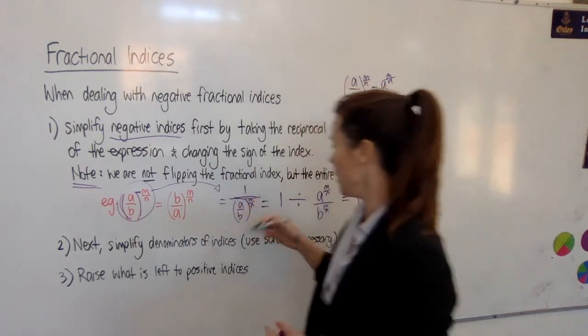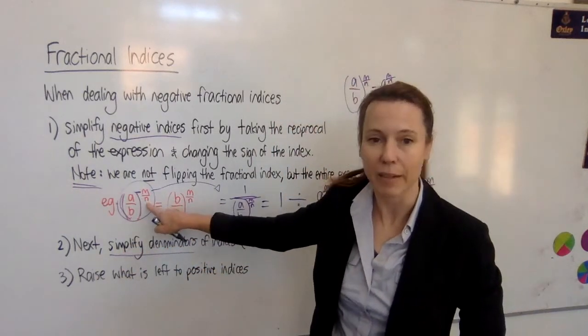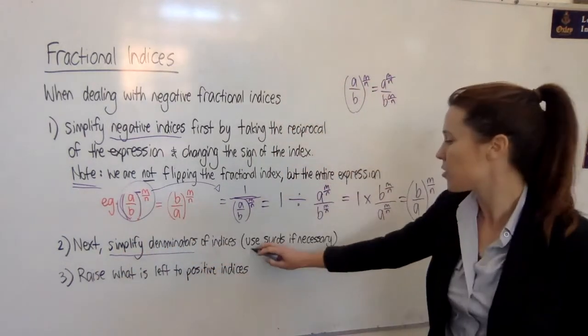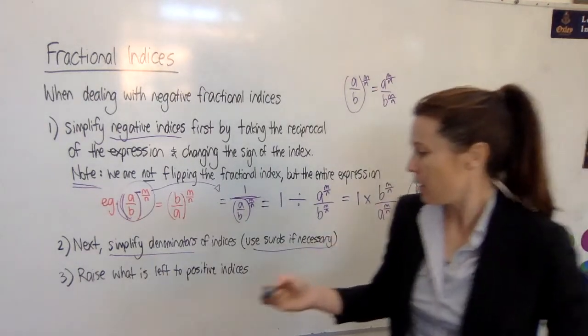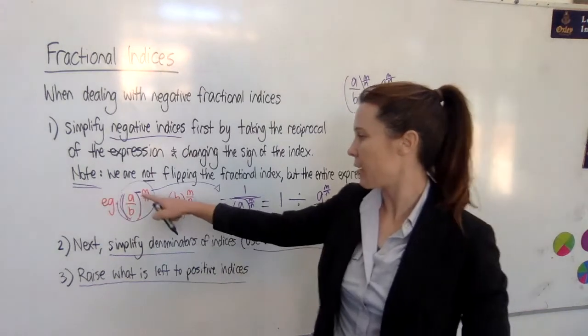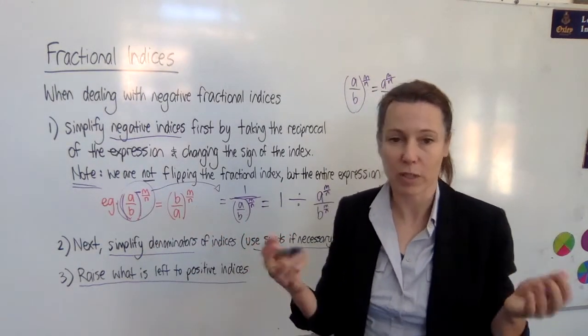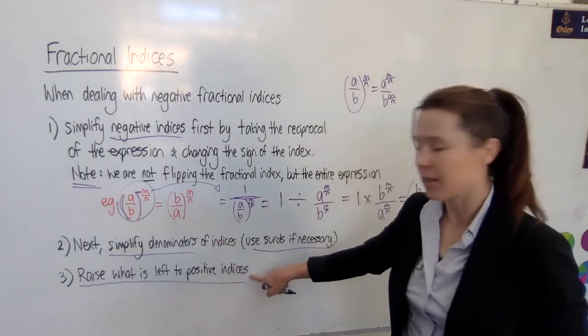Now once you've done that, next simplify the denominators of indices—so that's the n part—take care of that. You can use roots if necessary. And then what you should be left with is just positive indices, because you've got rid of the negatives and you've got rid of the fractions. So you should have something just to the power of two or three or four, some whole number, and you should be able to then take care of that last.